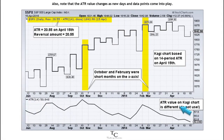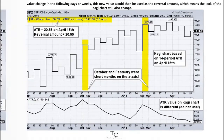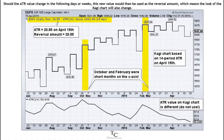Also note that the ATR value changes as new days and data points come into play. The reversal amount is based on the ATR value at the time the chart is created. Should the ATR value change in the following days or weeks, this new value would then be used as the reversal amount, which means the look of the CAGI chart will also change.